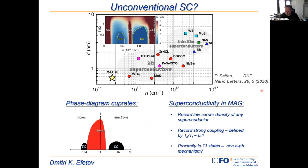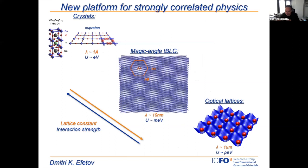This system sits exactly at intermediate length scales compared to crystals and optical lattices, and there are really new ways to manipulate it. The lattice constant here is 10 nanometers — not angstroms like in cuprates and crystals, and not microns like in optical lattices. So there are new types of manipulations we can perform at this novel length scale.